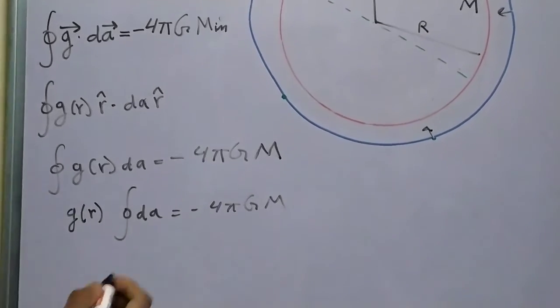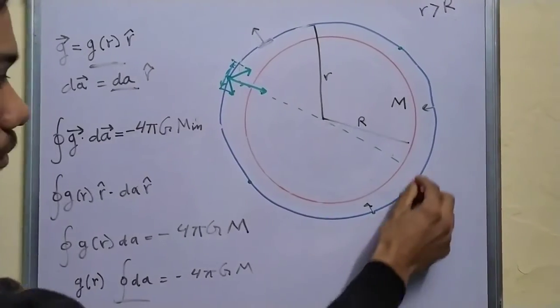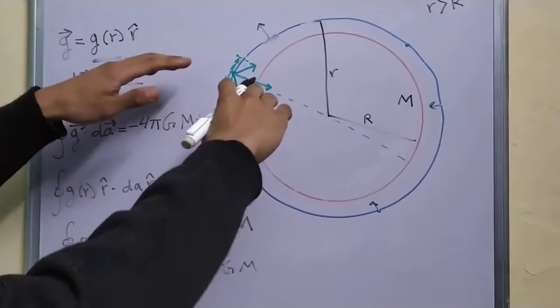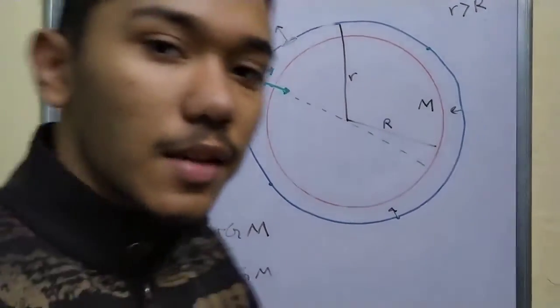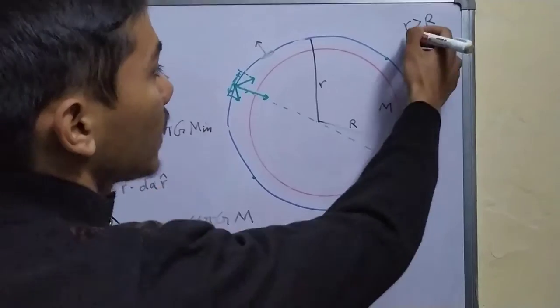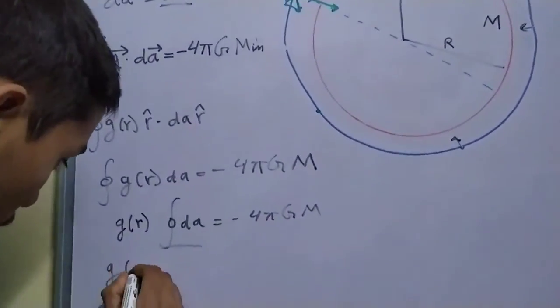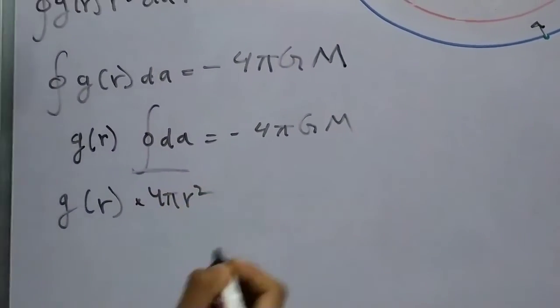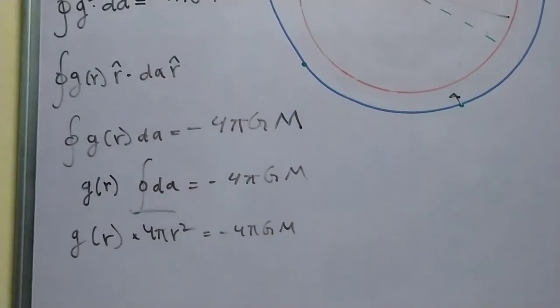Now what is this quantity? This quantity is just the sum of all such small area elements. So what will we get if we sum all these areas? We'll just get the surface area of a sphere having radius small r. So G of R times 4 pi R square is equal to minus 4 pi G M.